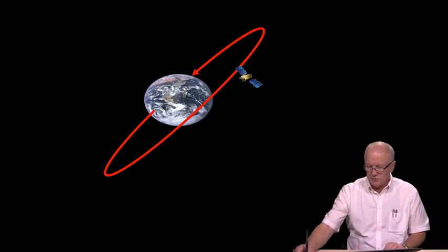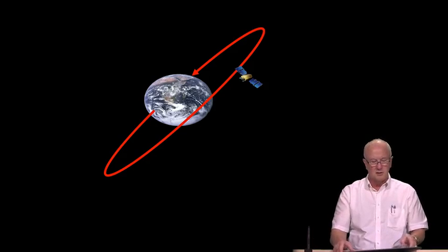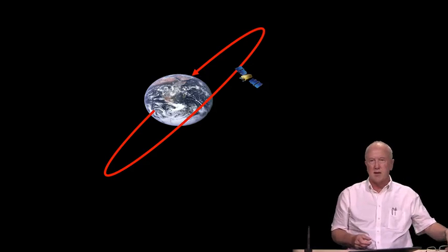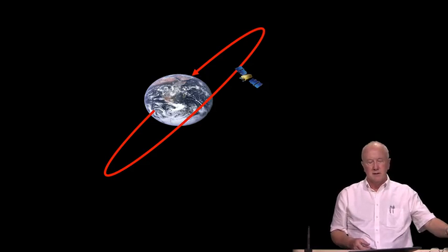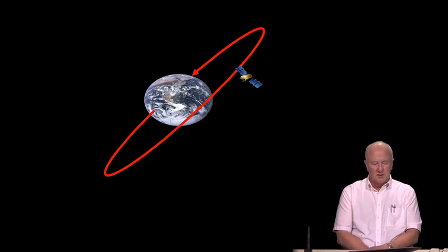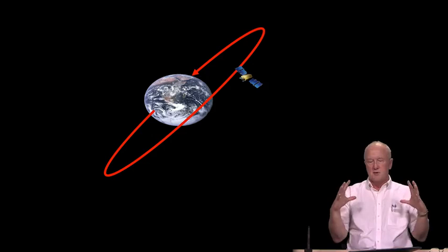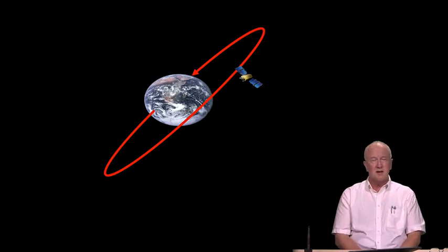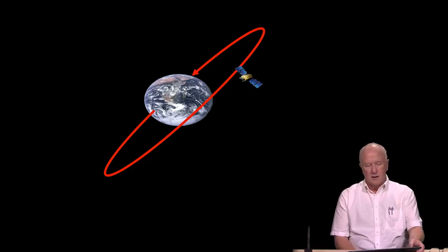Now we'll talk about departures from the 1 over r squared model that Newton used to establish the correctness of the Keplerian parameters. And if what we had was simply what's shown here, a perfectly spherical Earth, homogeneous in density, and the only other object in space was our satellite, then the 1 over r squared law would be ruling the roost. It would be the only thing in force. And the Keplerian parameters would be a perfect description of the satellite orbit.